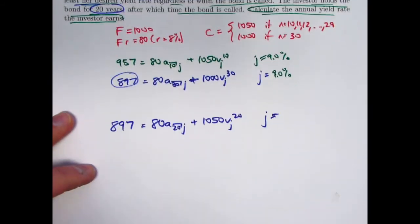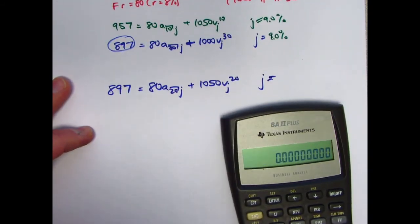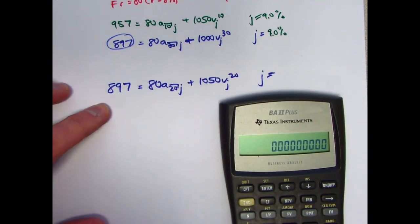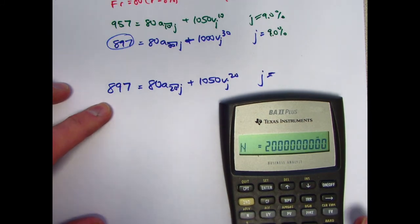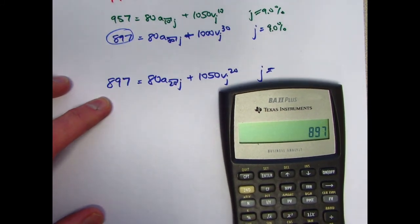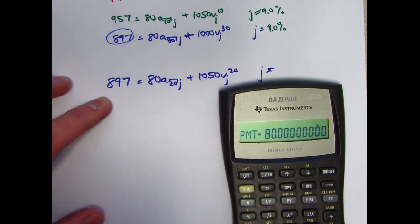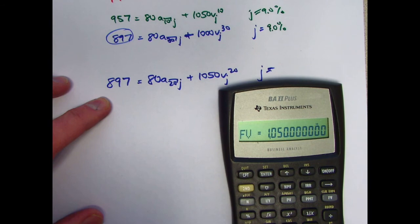So now when I use the financial function on the calculator, this should be the final answer to the problem, and it should be bigger than 9%. So now N is 20. 897 negative is PV. 80 is PMT.